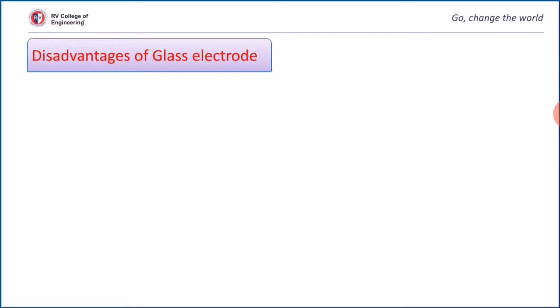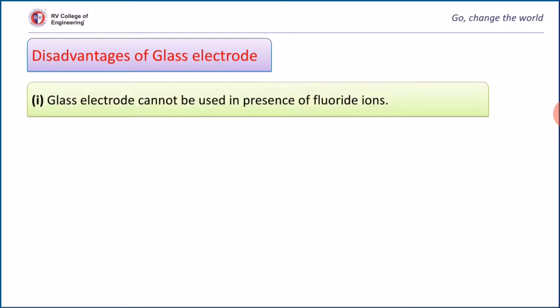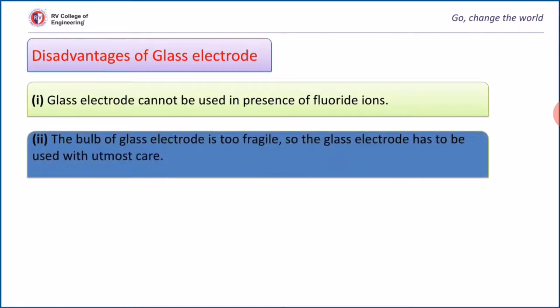Let us see a few disadvantages of glass electrodes. This glass electrode cannot be used in presence of fluoride as it attacks the glass membrane. The bulb of the glass membrane is very small thickness, 0.01 mm to 0.03 mm, and is very delicate to handle.